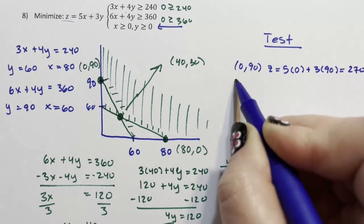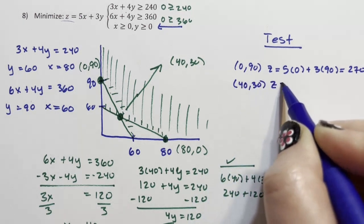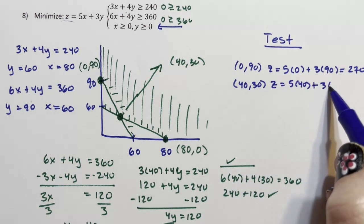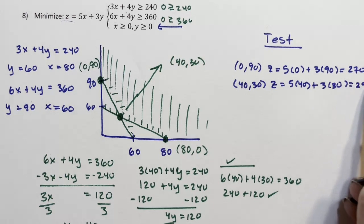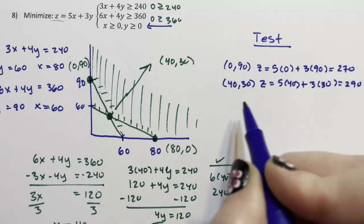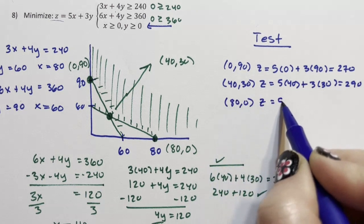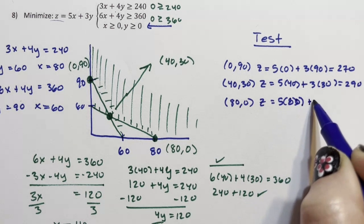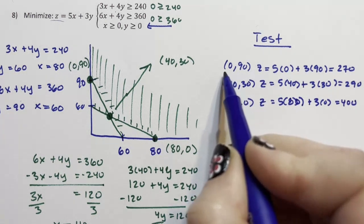I test 40, 30. z equals 5 times 40 plus 3 times 30. And I get 290. I test 80, 0. z equals 5 times 80 plus 3 times 0. And I get 400.